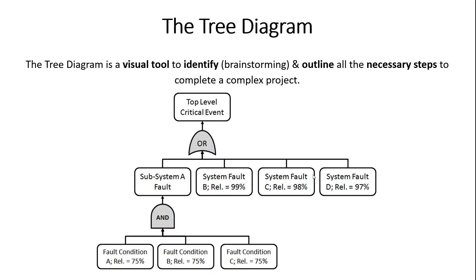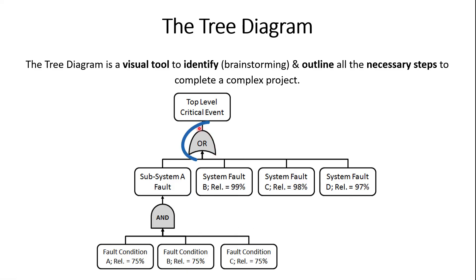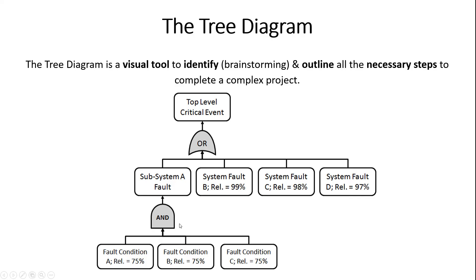Another way to use the tree diagram in quality is fault tree analysis. In the previous project example, we started with the goal we were trying to accomplish. With a fault tree, we start with the top-level critical event and then brainstorm all the fault conditions that might lead to it. The fault tree also helps you understand the relationships between faults and can be used to calculate the reliability or likelihood of your top-level critical event occurring.